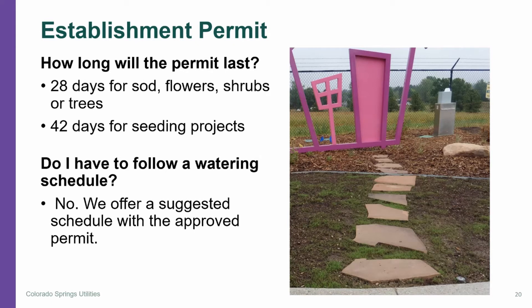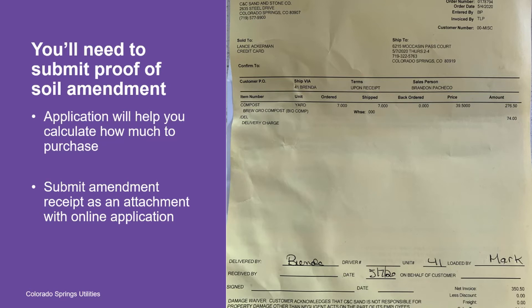You will not have to follow a watering schedule; however, we offer a suggested schedule with the approved permit. One item that you will need to provide is proof of soil amendment if you are installing sod or non-native grass. If you fill out the application online, that will help you calculate how much soil amendment to purchase. Carlos Springs Utilities does provide an approved amendment list on our website. So if you are applying for a sod project or a non-native seed project, you would want to submit the amendment receipt as an attachment with the online application. We accept PDF forms, JPEG forms, and a variety of other file formats — it's as easy as taking a picture of the receipt.